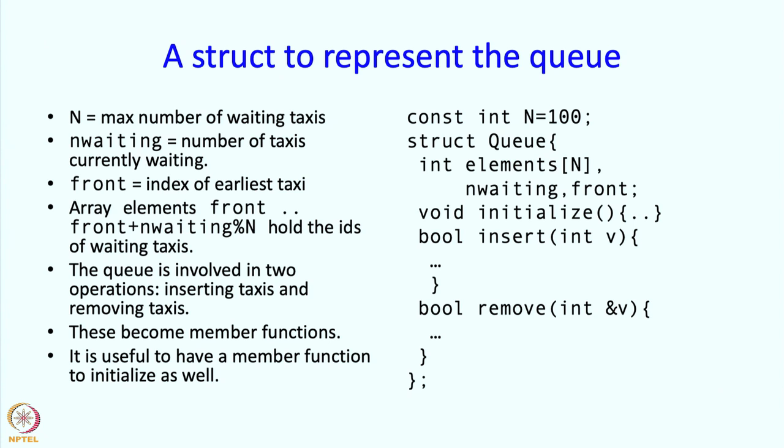The queue that we create should make sense. So n waiting and front should make sense, and at the beginning that is how they make sense. Insert is going to contain the code of what is needed when you insert an additional element into the queue. Remove is going to contain the code which is needed for removing elements from the queue.